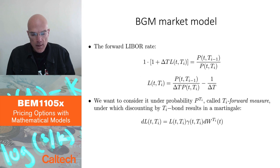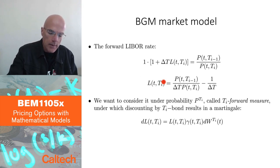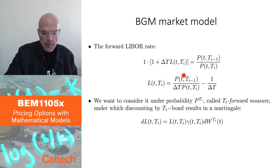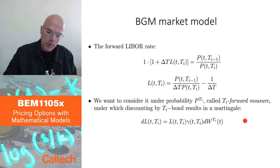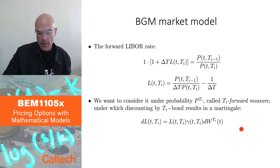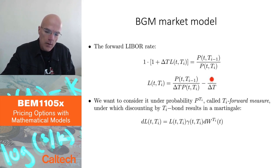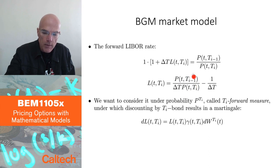If you look at the LIBOR rate, we are going to price it under a probability denoted P superscript T_i, which is called the T_i forward measure, such that when you discount by the T_i bond, you get a martingale. Instead of discounting by the bank account, we are discounting by the T_i bond — specifically, we discount the T_i minus 1 bond with the T_i bond — and we want to make it a martingale.